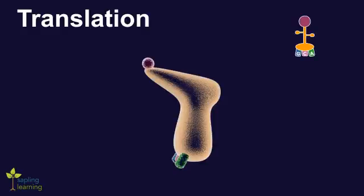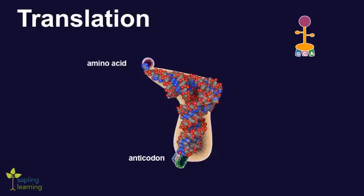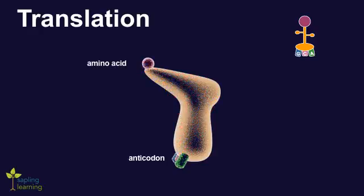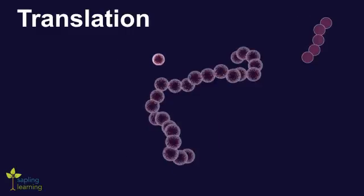Transfer RNA, or tRNA for short, contains an anticodon and is bonded to an amino acid. The amino acid carried depends on the tRNA's anticodon. The amino acids carried by the tRNA are bonded together in the ribosome to create a polypeptide chain.